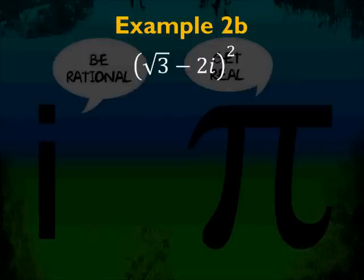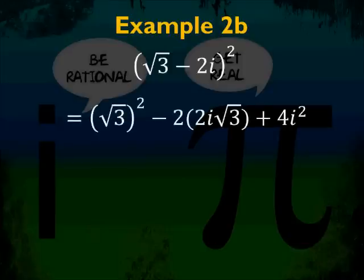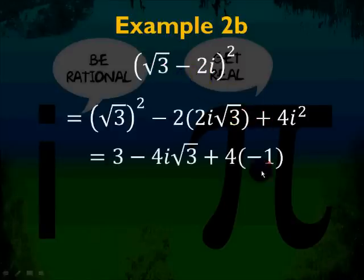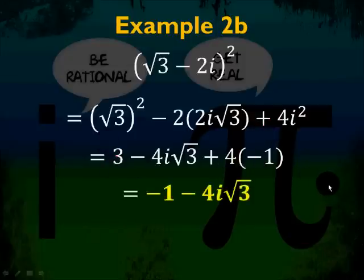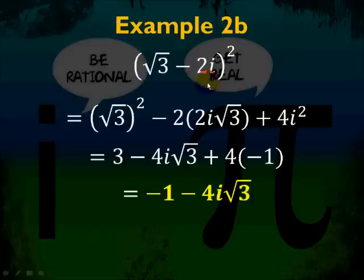Example 2b: radical 3 minus 2i, squared. When you have a perfect square binomial, use a squared minus 2ab plus b squared. You get radical 3 squared minus 2 times 2i times radical 3 plus 4i squared. Radical 3 squared is 3, and 4i squared is negative 4. Combining like terms gives negative 1 minus 4i root 3. Remember the perfect square binomial — or if needed, you can use FOIL to get the same answer.